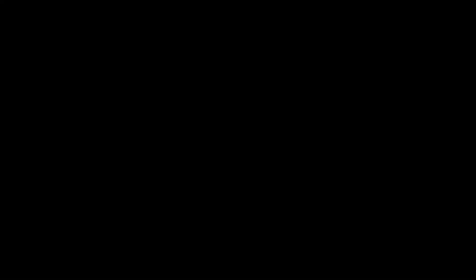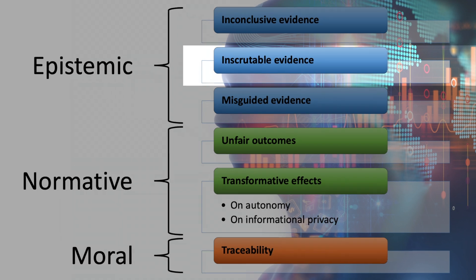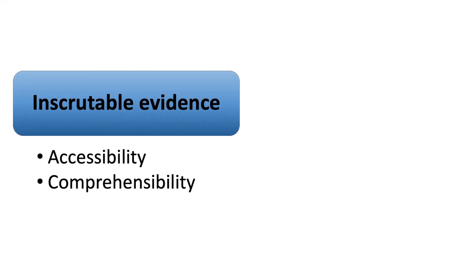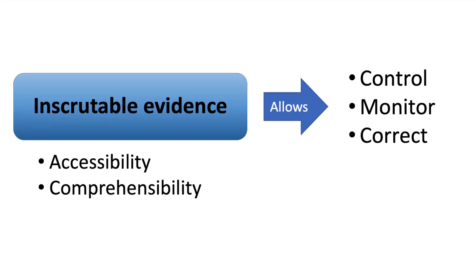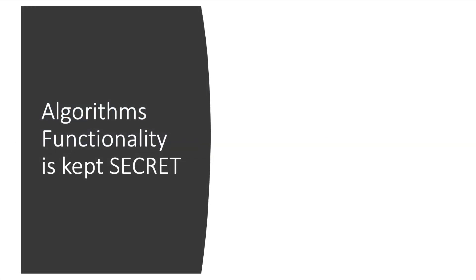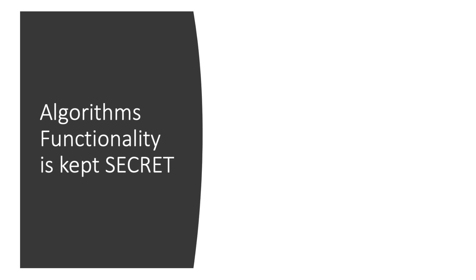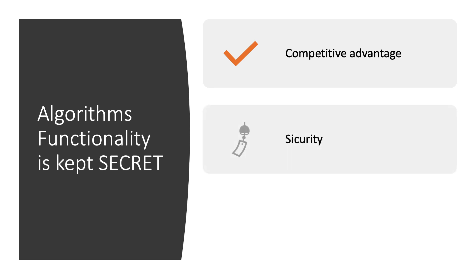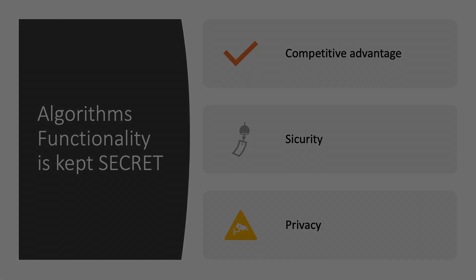The second concern is related to the scrutability of evidence, which includes the accessibility and comprehensibility of the decision-making process. This form of transparency allows to control, monitor, and correct the execution of algorithms. Accessibility to the functioning of an algorithm is often intentionally kept secret for the sake of competitive advantage, security, or privacy. So in some way, transparency runs counter to ethical ideals. Besides being accessible, the real challenge is to understand the rationale of algorithms, which is sometimes obscured.